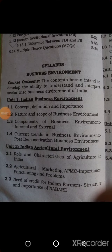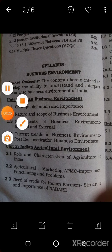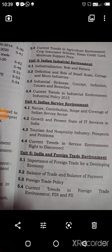The second unit is Indian Agriculture Environment, covering the role and characteristics of Indian agriculture. Then the functioning of agriculture, agriculture marketing — its importance, functions, and problems — the need for credit for Indian farmers, the structure and importance of NABARD, current trends in agriculture environment, crop insurance scheme, Kisan credit card, and minimum support price.